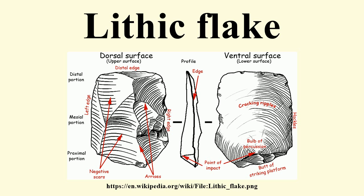The striking platform is the point on the proximal portion of the flake on which the detachment blow or pressure was placed. This may be natural or prepared. Termination type is a characteristic indicating the manner in which the distal end of a flake detached from a core.